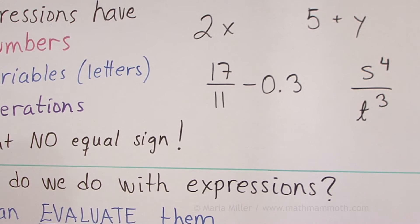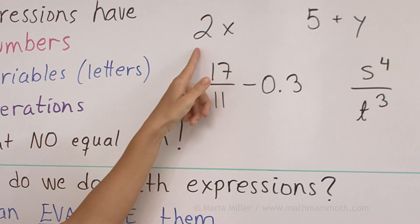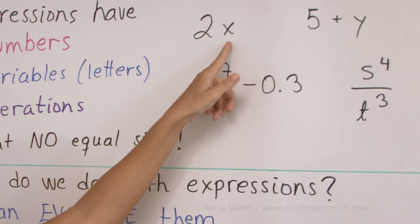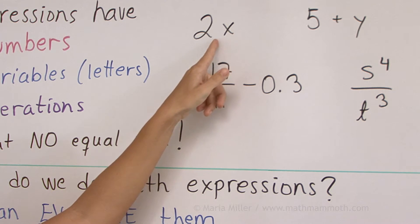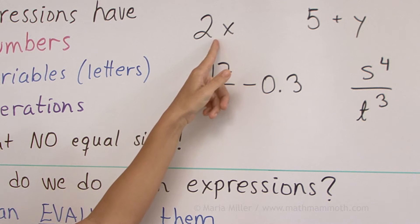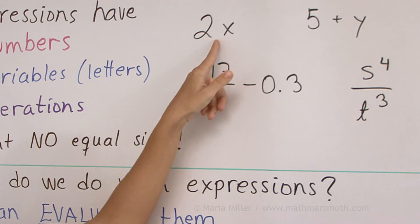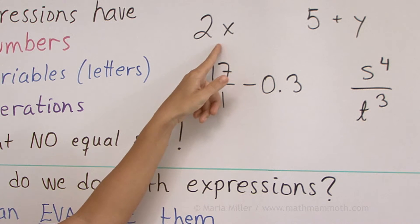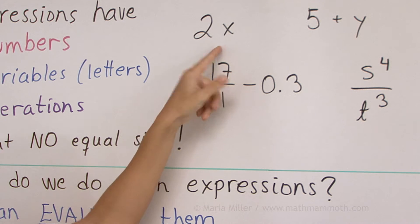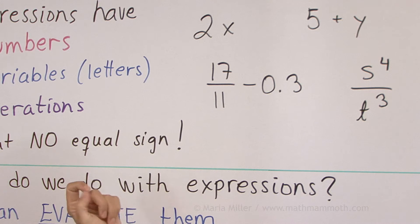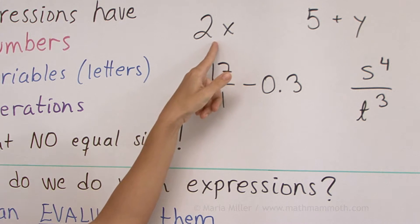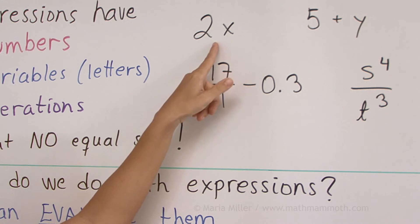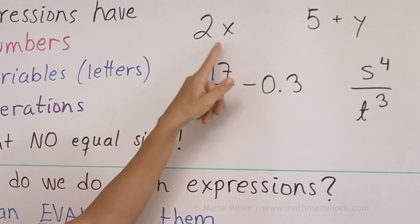Let me give you some examples that I wrote here. For example, 2x is an expression. It has 2, which is a number, x is a letter, and then it has an operation — 2 times x. There's a multiplication here, but in algebra we do not write the multiplication sign in between numbers and letters.